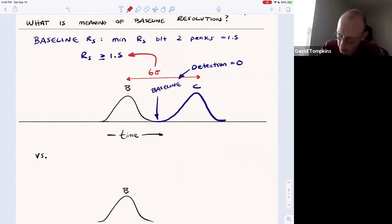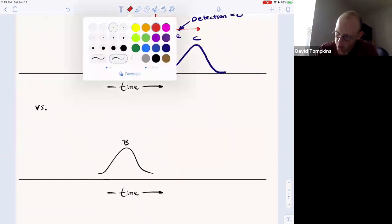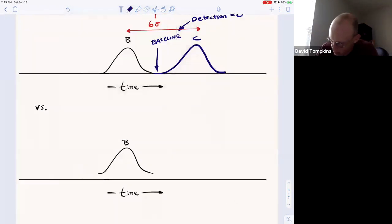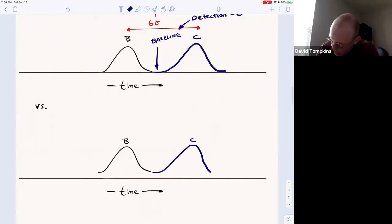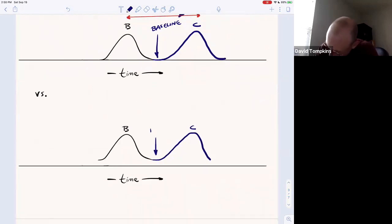And that's what leads this resolution calculation of 1.5 being baseline resolved. As opposed to non-baseline resolved, where peak B then becomes peak C and the detection does not drop to zero. Or it does not hit the baseline.